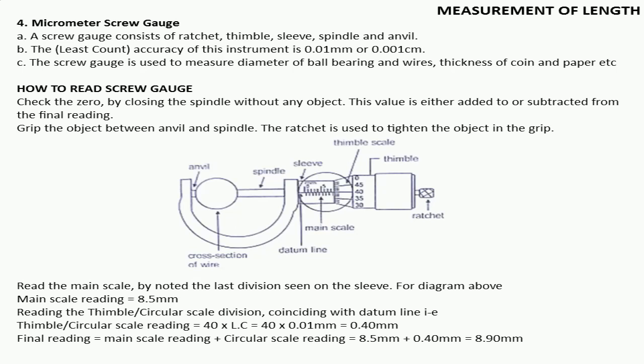Now in the diagram, if you see, first of all we will discuss the parts of Micrometer Screw Gauge. The Screw Gauge or Micrometer consists of ratchet, thimble, sleeve, spindle, and anvil, in which in the spindle we place the object and measure the scale. If you see the diagram, there are two scales in the Micrometer Screw Gauge.